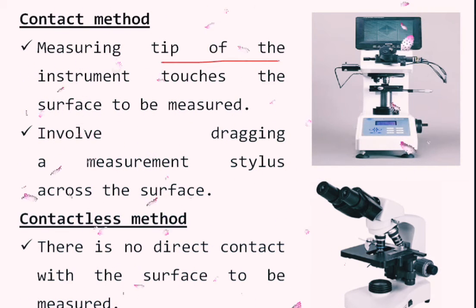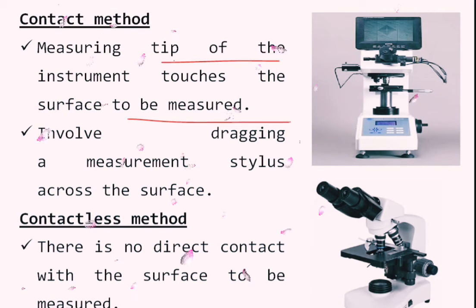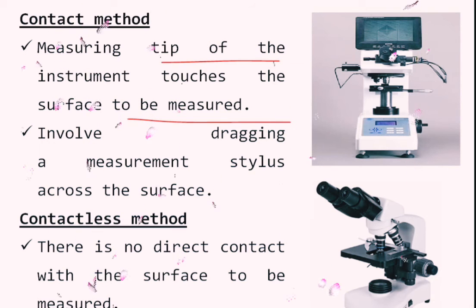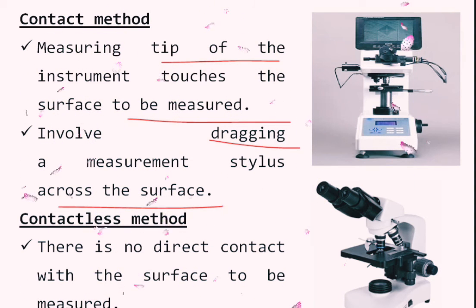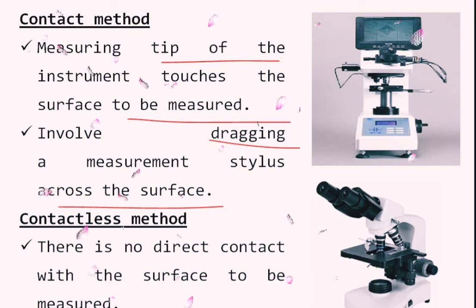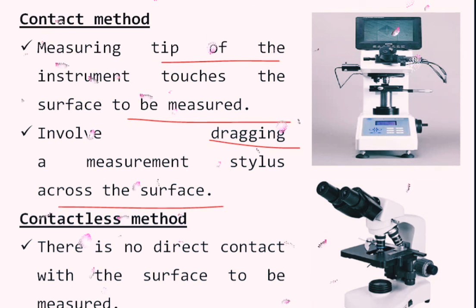Finally, contact and contactless methods. In the contact method, the measuring tip of the instrument touches the surface to be measured — for example, conducting a hardness test or measuring surface roughness. A measurement stylus is dragged across the surface. In the contactless method, there is no direct contact with the surface — for example, using an optical microscope or scanning microscope to visualize welded joints and take surface magnifications without touching the component.